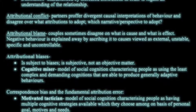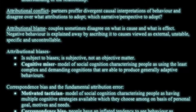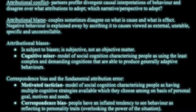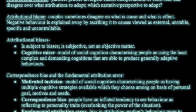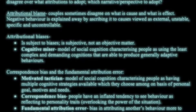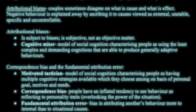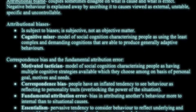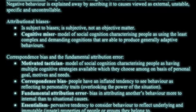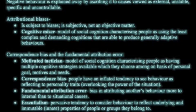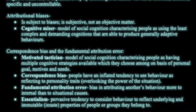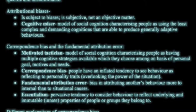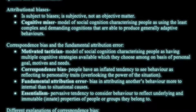Attributional biases include cognitive misers, a model of social cognition characterizing people as using the least complex and demanding conditions to produce generally adaptive behaviors — essentially mental shortcuts. The motivated tactician model characterizes people as having multiple cognitive strategies available, chosen on the basis of personal goals, motives, and needs. Correspondence bias is the inflated tendency to see behavior as reflecting personality traits, overlooking the power of the situation. The fundamental attribution error is a bias in attributing another's behavior more to internal rather than situational causes.